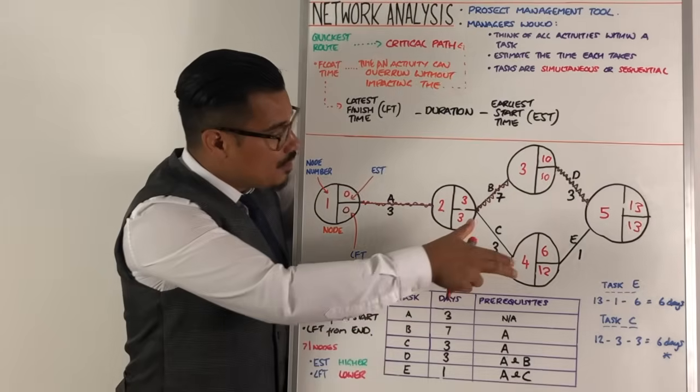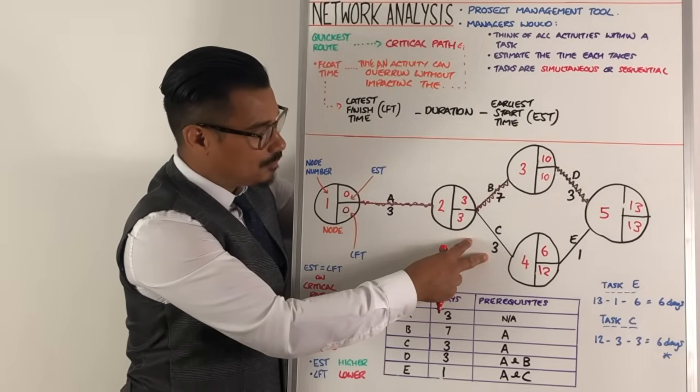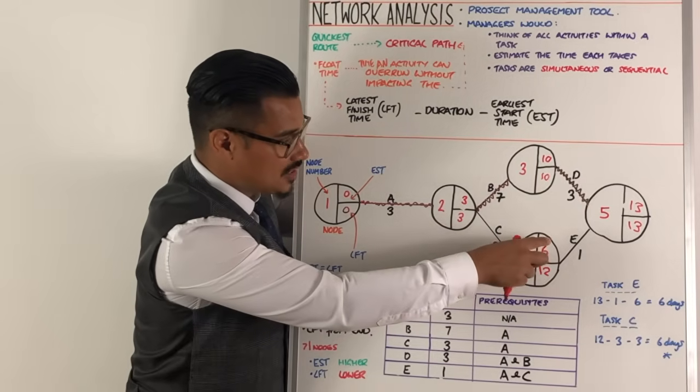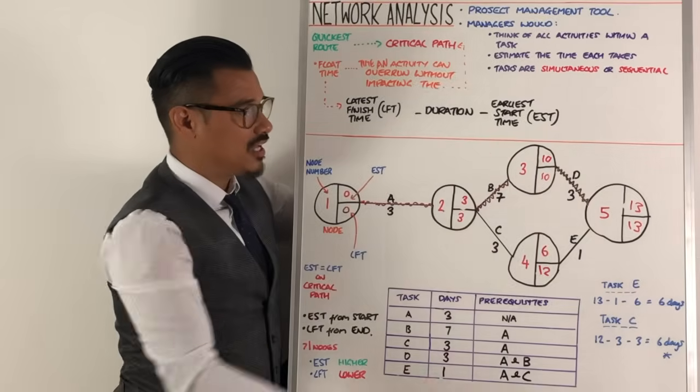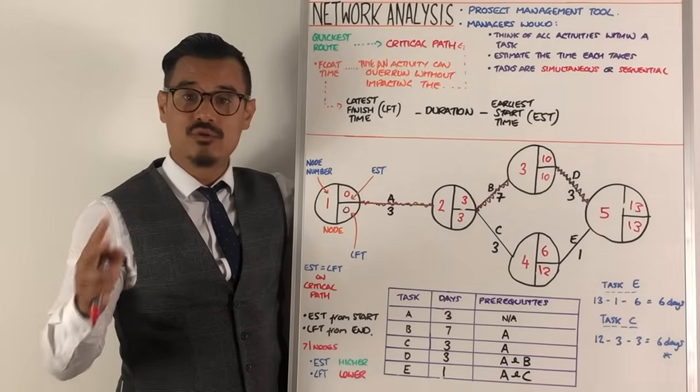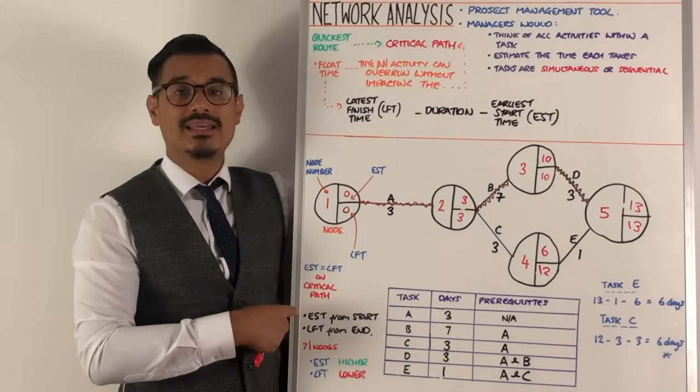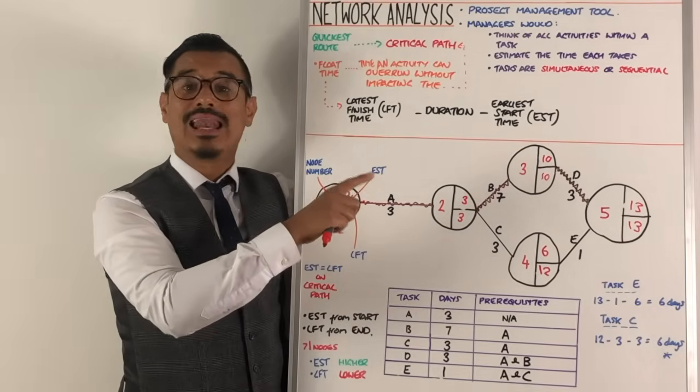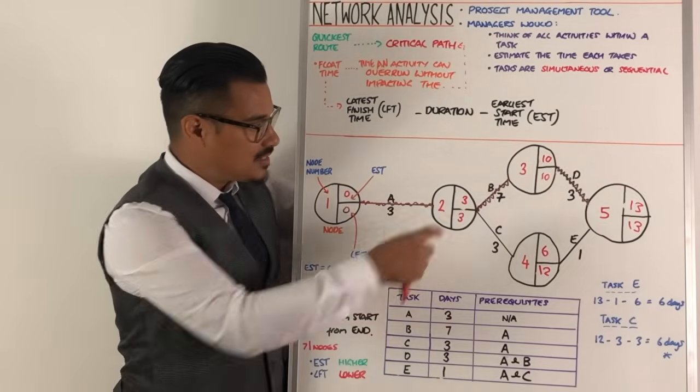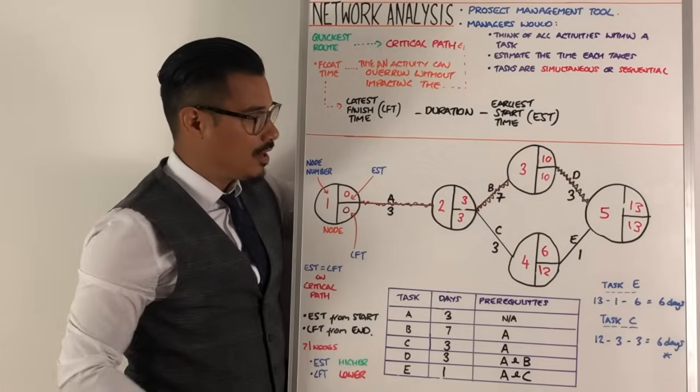However, recognize that if you did max out that float when you were on task C and you took an additional 6 days, that means that when you get to task E, you have to do it in one day in order to keep on the quickest route and that critical path. So key things to remember before we move on is that if the EST equals the LFT, that's the critical path. If you're calculating the EST, you move from start to end. If you're calculating the LFT, you move from end to start. And when there are multiple nodes, if it's the EST, take the higher number. If it's the LFT, take the lower number.